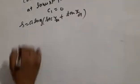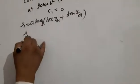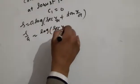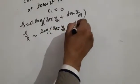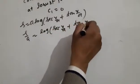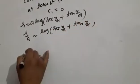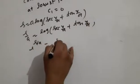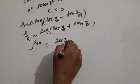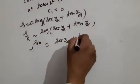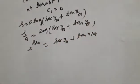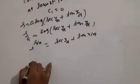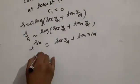So s/a = log(sec(x/a) + tan(x/a)), which means e^(s/a) = sec(x/a) + tan(x/a), and e^(-s/a) = sec(x/a) - tan(x/a).